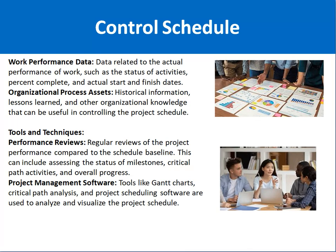The tools and techniques for the Control Schedule process start with Performance Reviews. Performance reviews mean reviewing the work in progress against the schedule baseline, assessing the status of milestones, critical path activities, and overall progress. For example, if software development was supposed to be completed by January but in mid-January you notice it is not going as planned, you must raise a red flag and take corrective action.